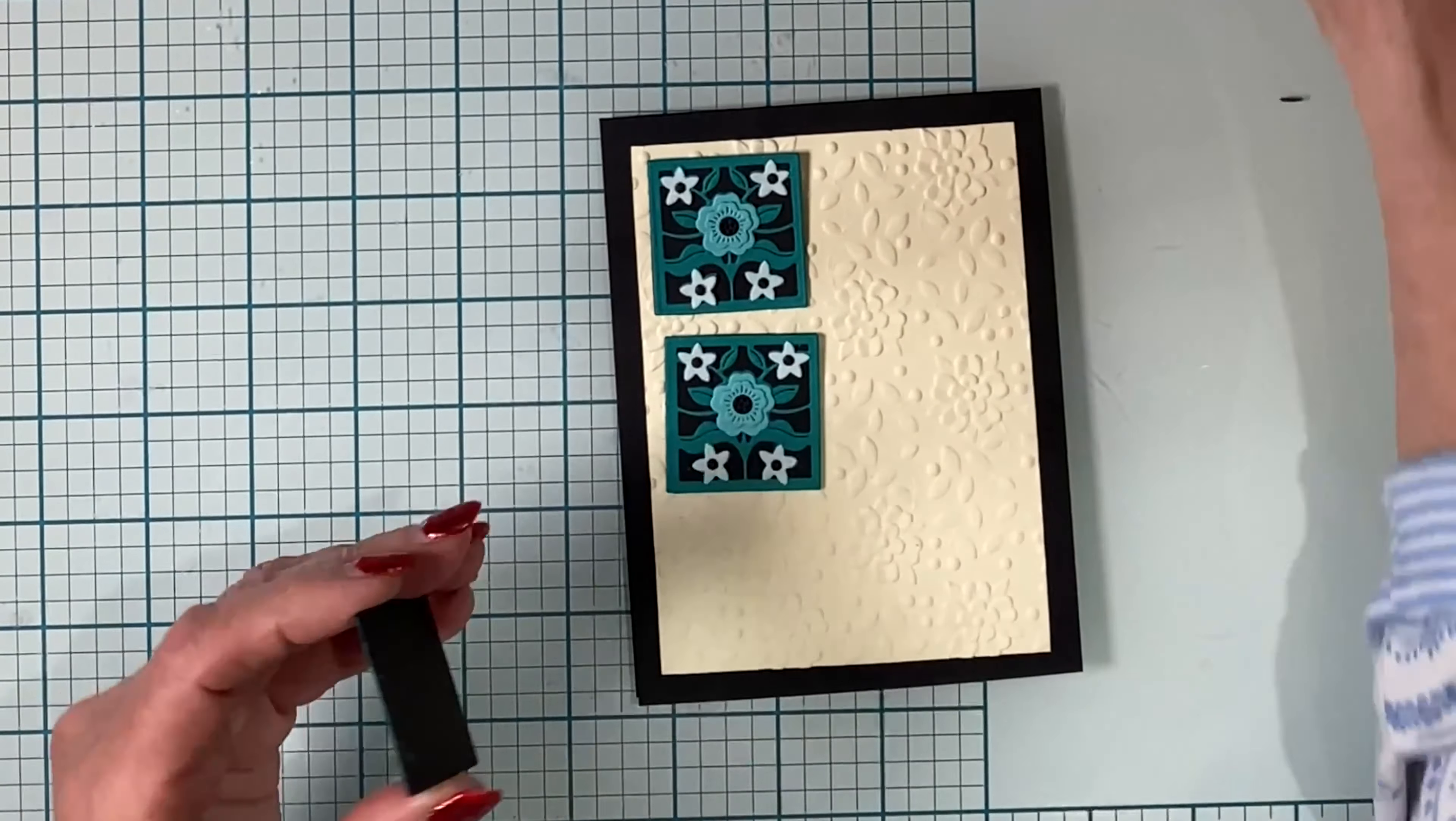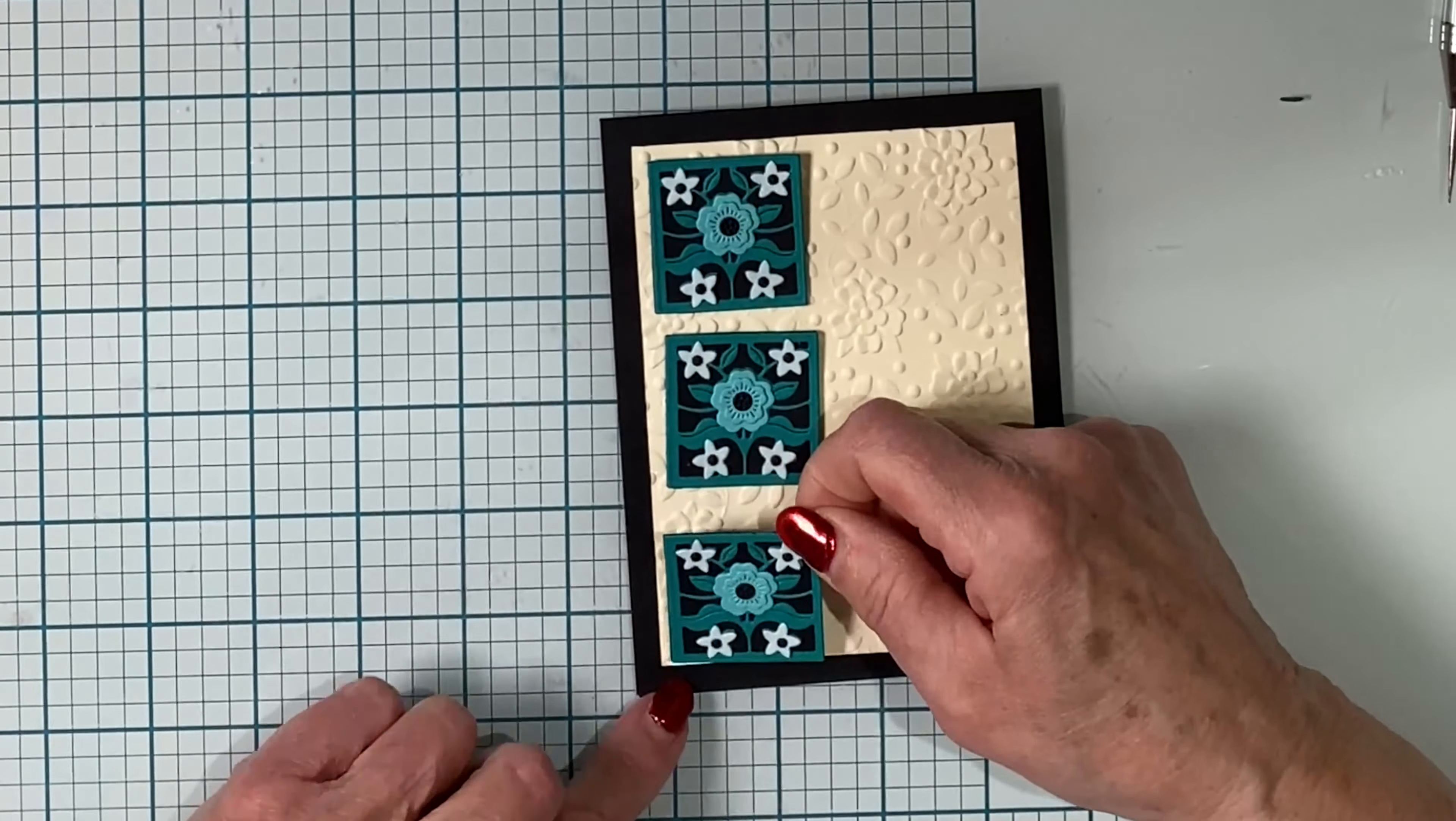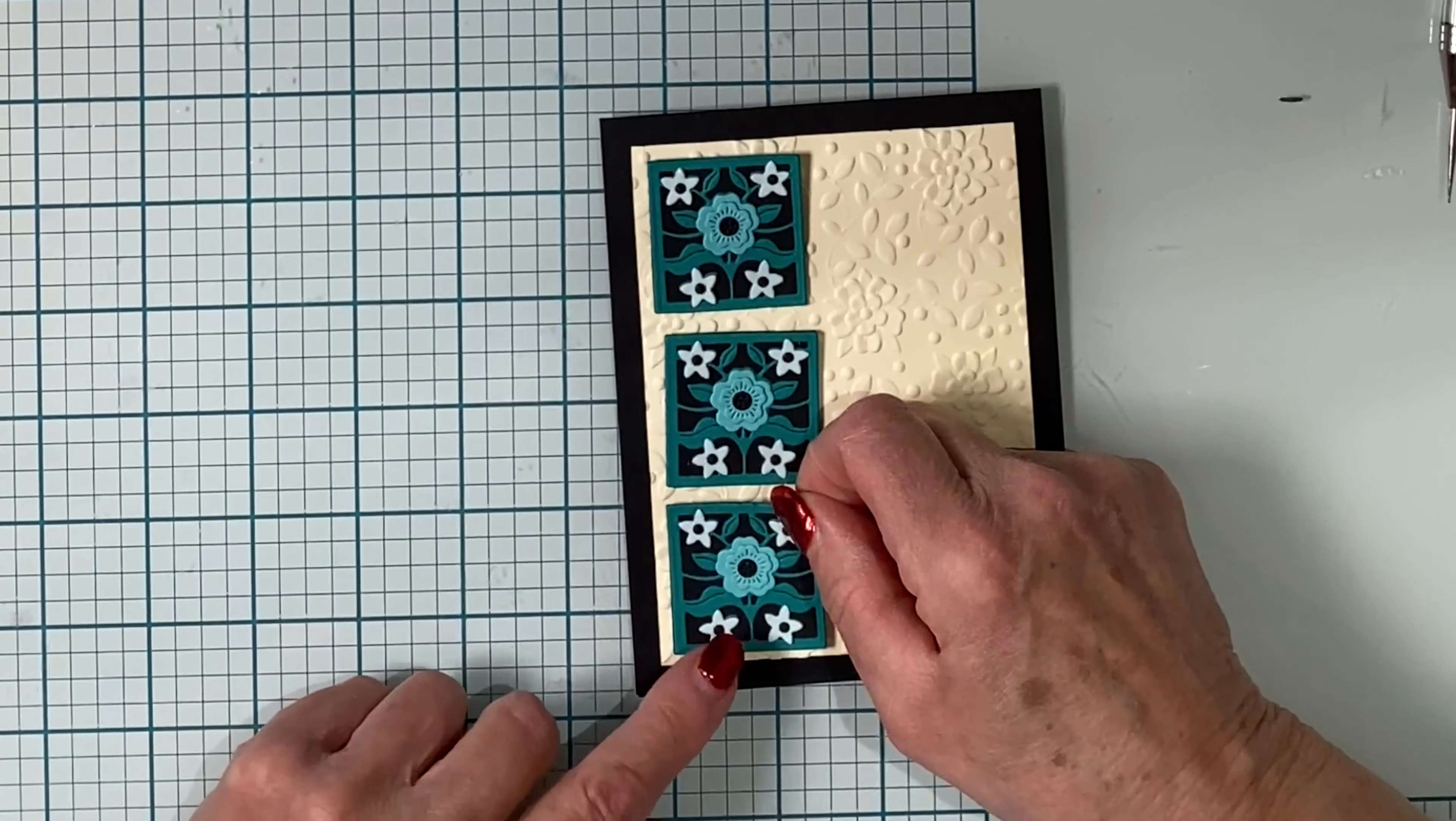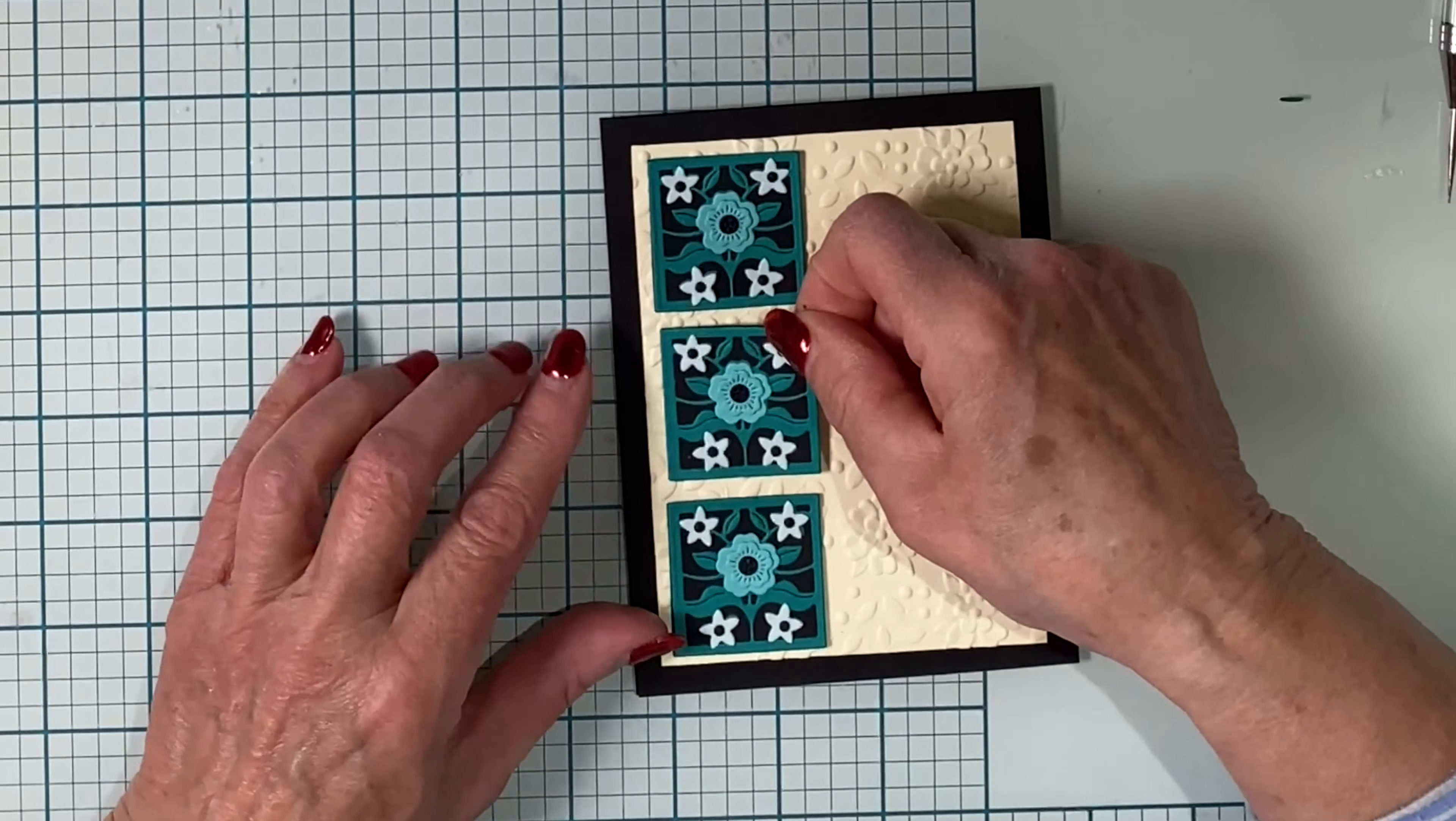To get these tiles aligned as best as I can without a ruler, I adhere first the top tile, then the bottom tile, centering the third one between the two.